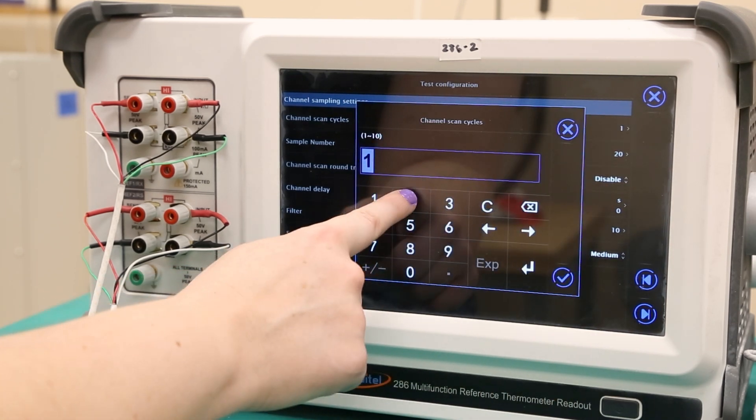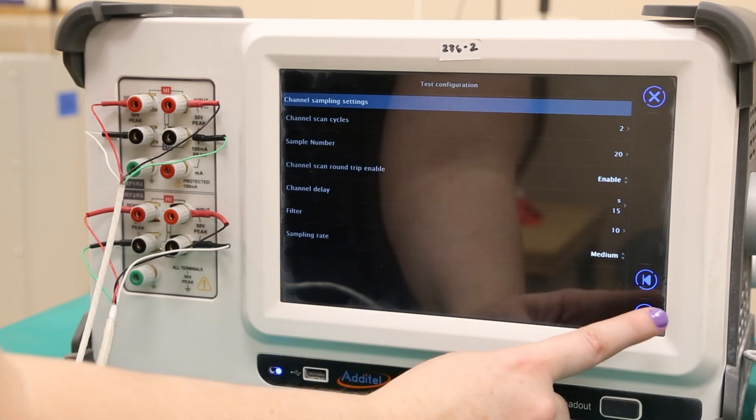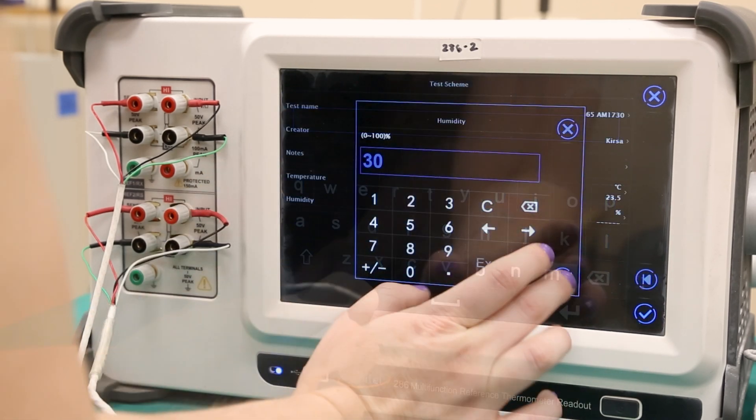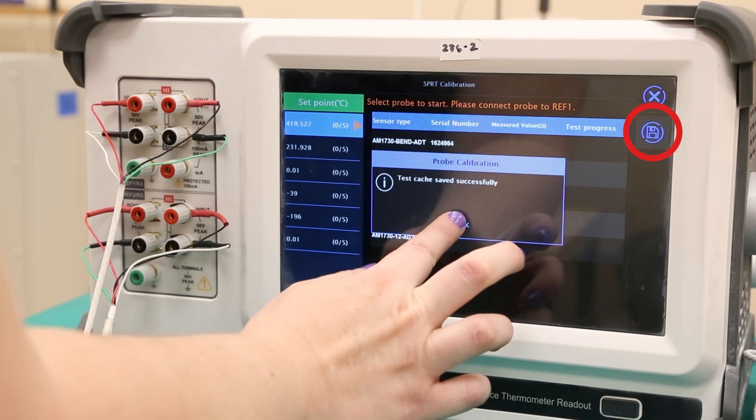On this screen, sampling and scan settings can be changed for the entire test. Finally, the test can be named and saved with relevant metadata. Press the checkmark button, then the save button to save this newly configured test.